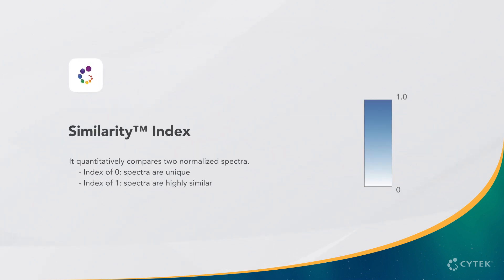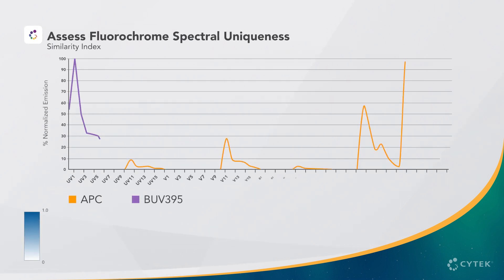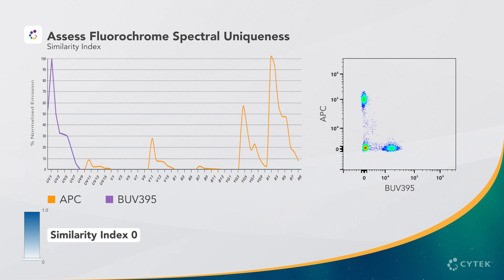Taking the normalized signatures one step further, SciTec developed a metric called the similarity index to quantify the uniqueness between two spectral signatures. The index goes from 0 to 1, where 0 represents dyes that are spectrally unique and 1 represents dyes that are highly similar. Examining BUV395 and APC, their normalized spectra do not overlap, so the similarity index is 0.